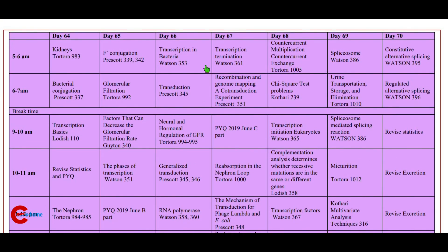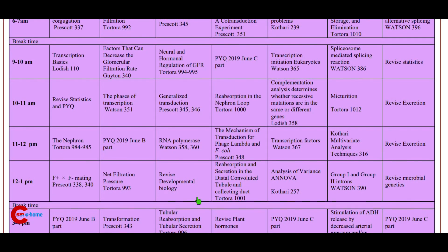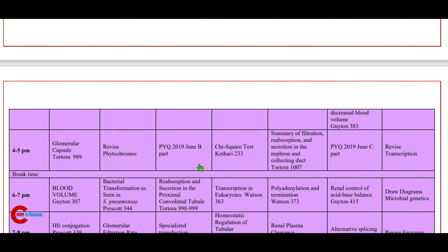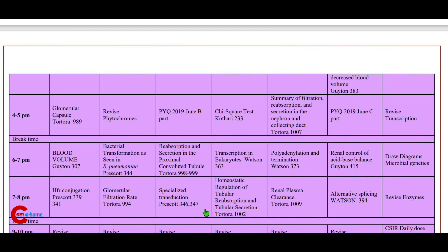Day 66: transcription in bacteria, morning 5 to 6 a.m.; 6 to 7 a.m. transduction press card; 9 to 10 a.m. neural and hormonal regulation of GFR; 10 to 11 a.m. generalized transduction press card; 11 to 12 p.m. RNA polymerase (Watson, page numbers 358 and 360); 12 to 1 p.m. revise developmental biology; 3 to 4 p.m. tubular reabsorption and tubular secretion (Tortora); 4 to 5 p.m. previous year question 2019.